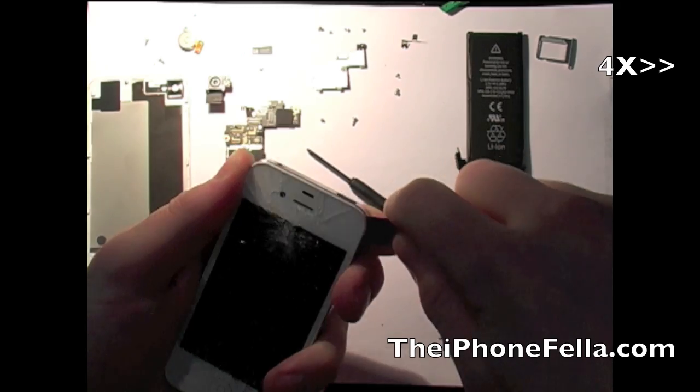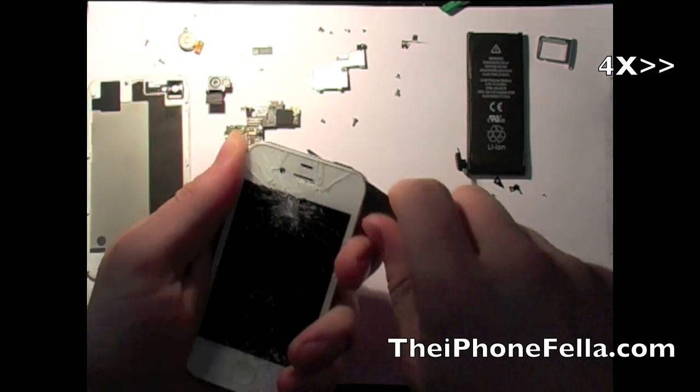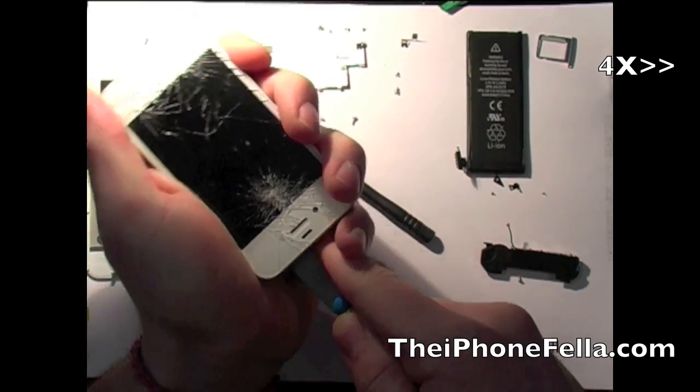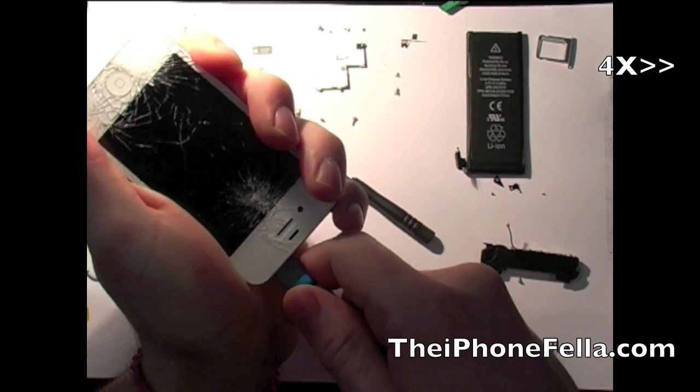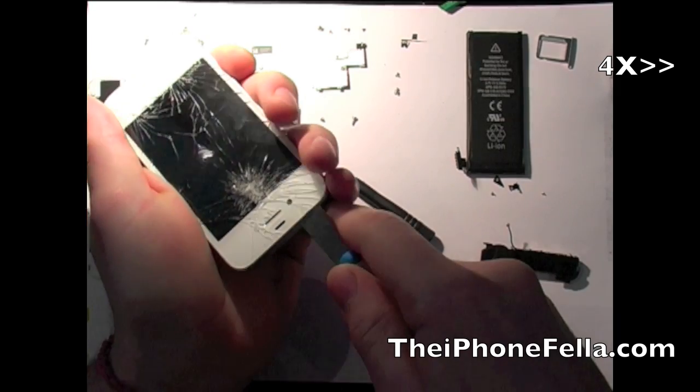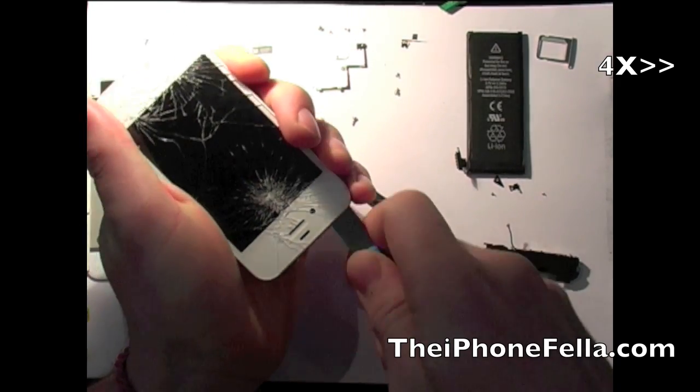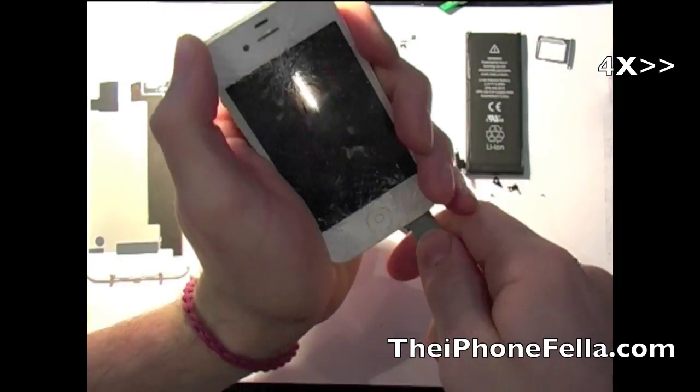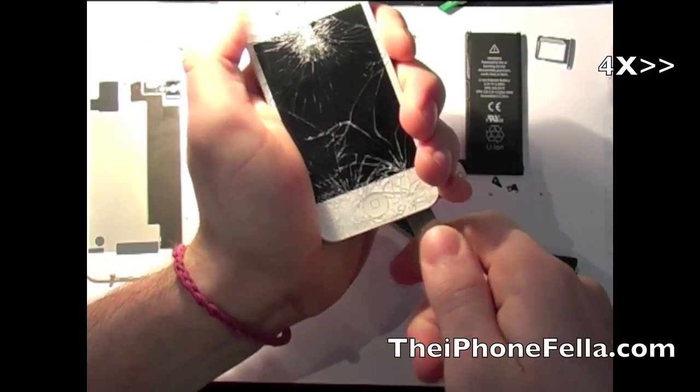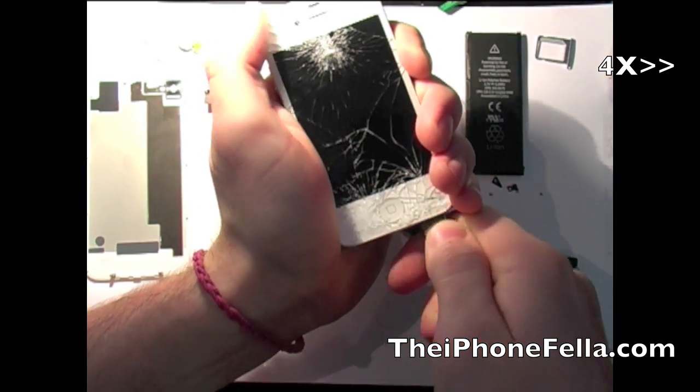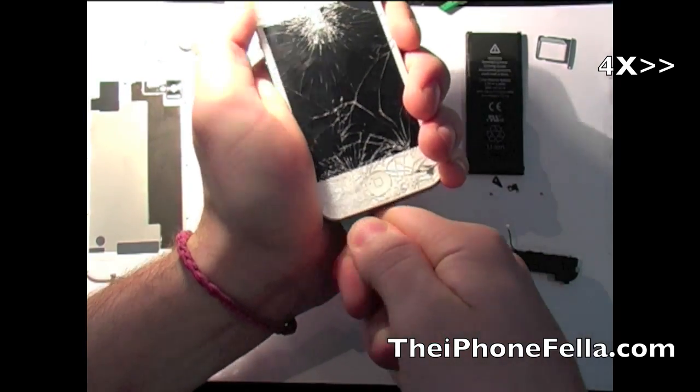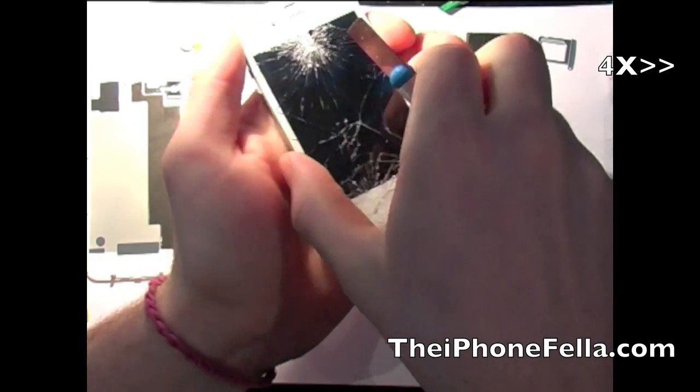Next I'm going to use this utility knife to remove the screen as it is still held in with some adhesive. One thing I have noticed and would like to point out is when you are using the knife over the proximity sensor area, which is just above the microphone, there is a little spacer which can sometimes be moved or removed. This will stop the function of the proximity sensor, so be careful when using your knife.